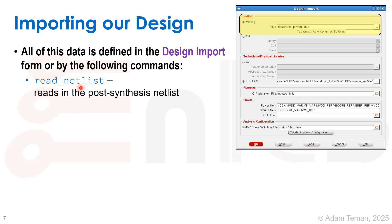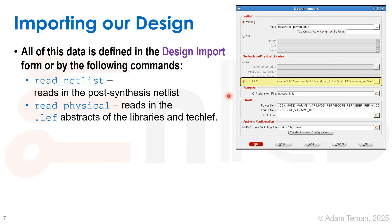The first thing is reading the netlist — the design itself defined in the gate-level netlist exported from synthesis. This reads in the post-synthesis netlist, defined in the netlist area using 'read Verilog.' You can have several files, but usually we just read in one Verilog netlist. Next, we do 'read physical,' providing a list of all the LEF files, which can be selected through the UI or provided as a long list of all LEF files needed for all the IP we're using.